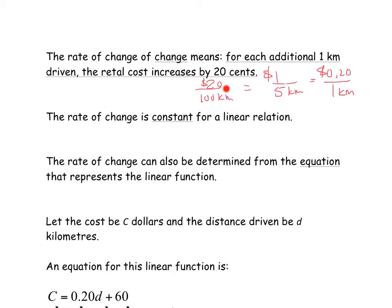You can simplify this fraction. So we started with $20 per 100 kilometers, and we simplified that all the way to, divided by 20, so that would be 5 kilometers, $1, all the way to 1 kilometer, 20 cents.